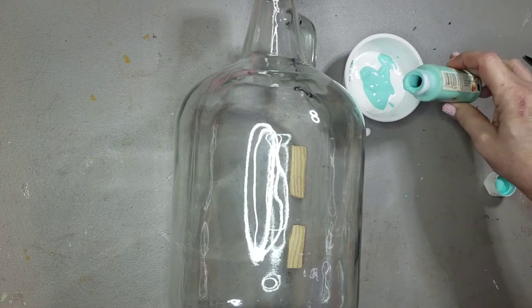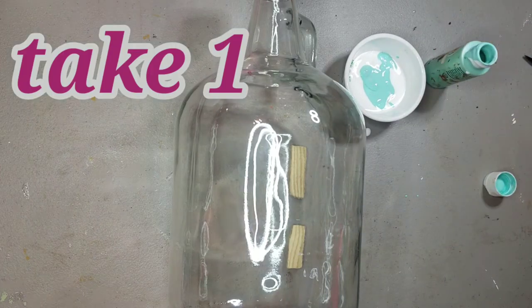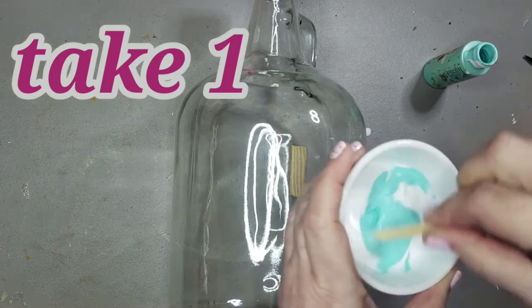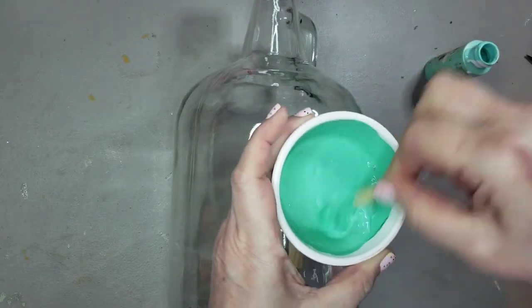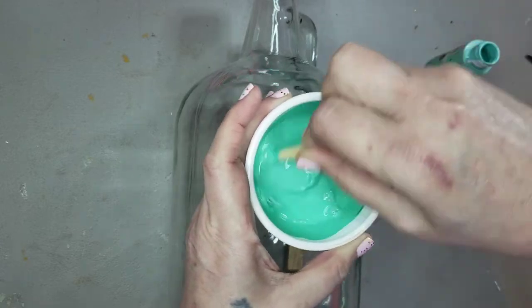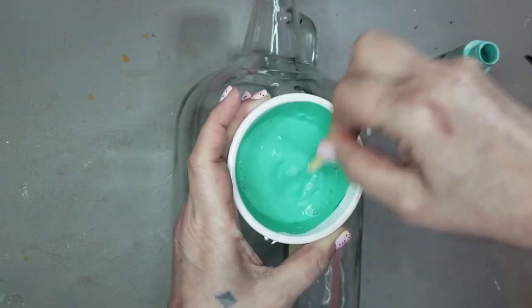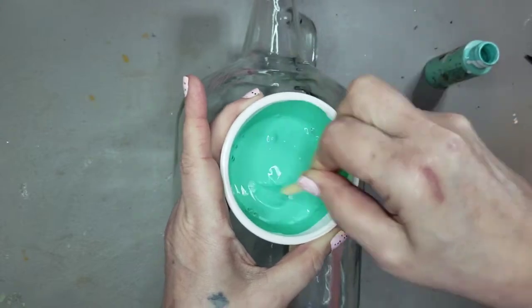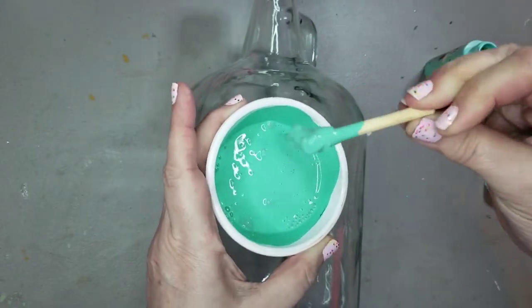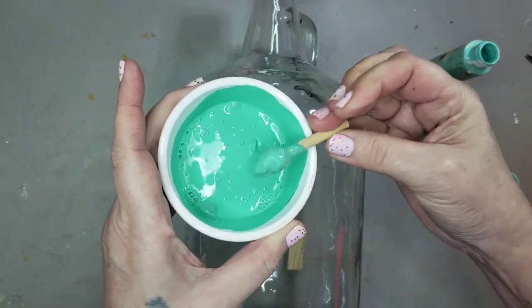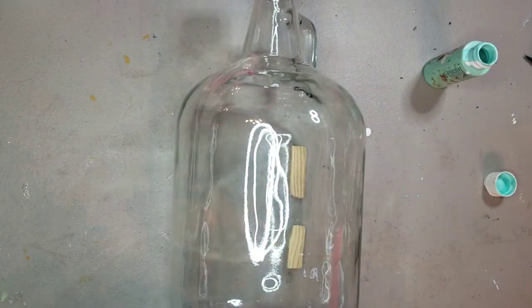And this is going to be take one because it didn't turn out like I expected it to to begin with so I did it over. Anyway here's that nice green color that I came up with. Mix all that all together, pick out those paint boogers and I started brush painting the outside of the bottle.